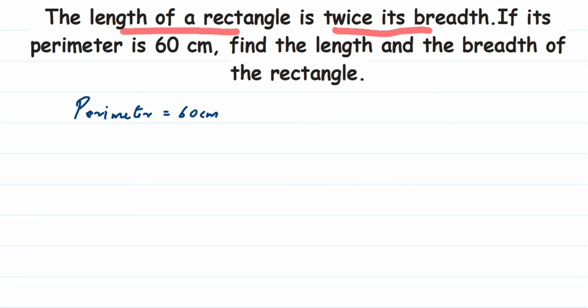Length is given in terms of breadth — that is, length is twice of breadth. We don't know what the breadth is, so we're going to assume breadth is equal to some variable, because that is unknown to us. It is important to take breadth as a variable. So let the breadth of the rectangle be x.